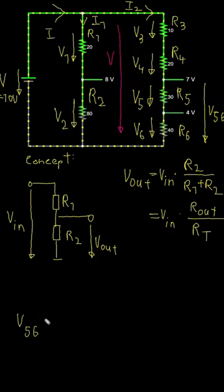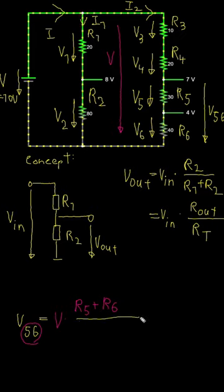V56 is the voltage which is simulated as 7V and this is the voltage drop across resistor R5 and R6. The output resistance in this case is the sum of the two resistors because they are in series.